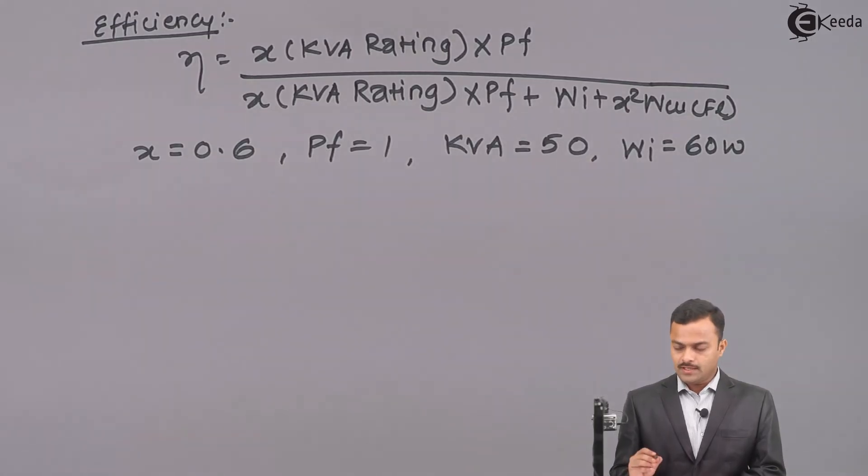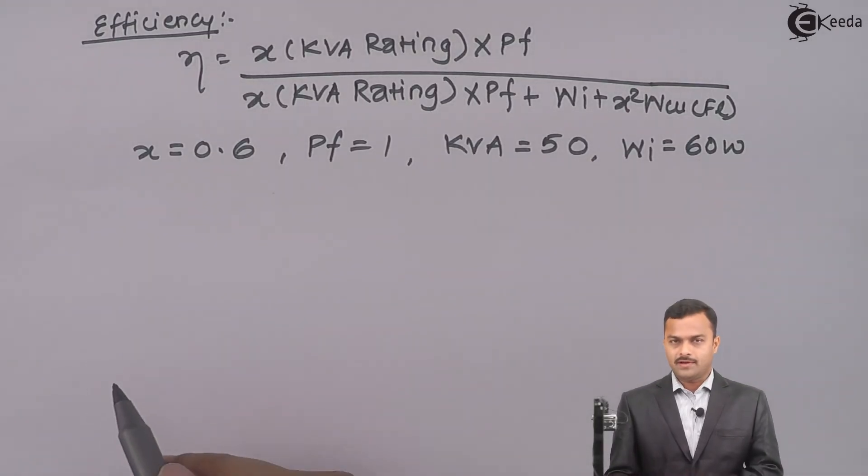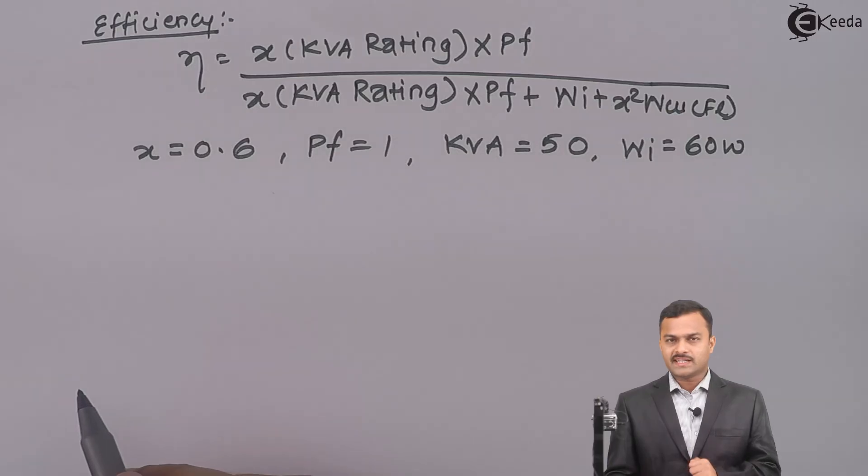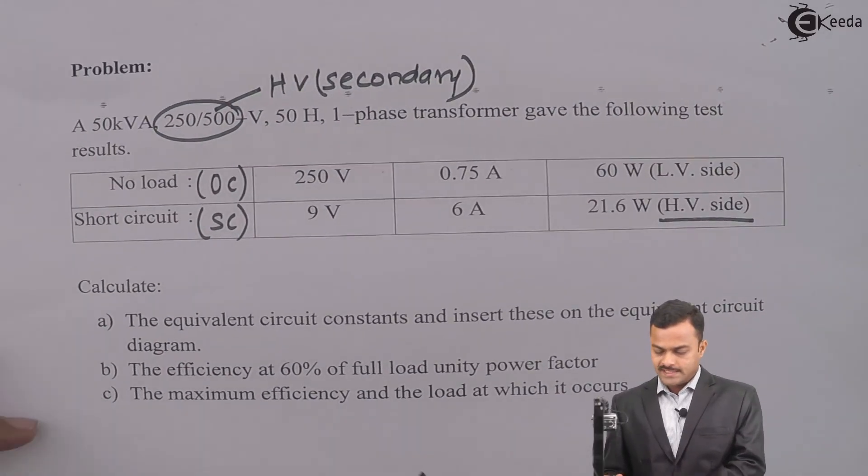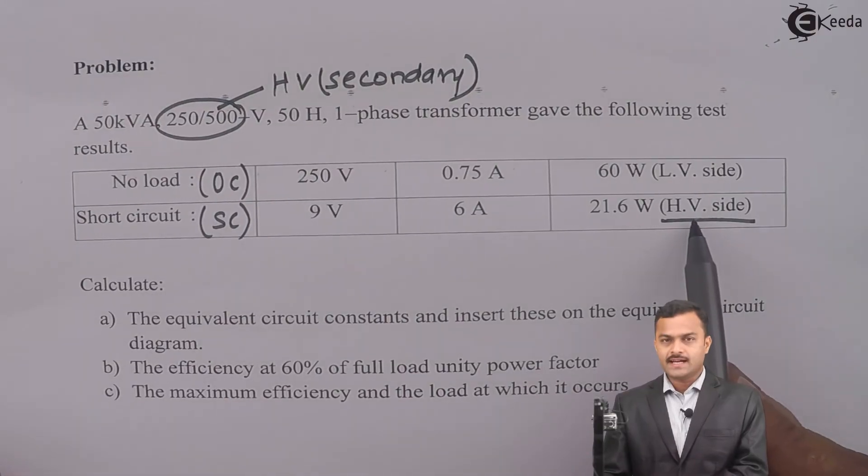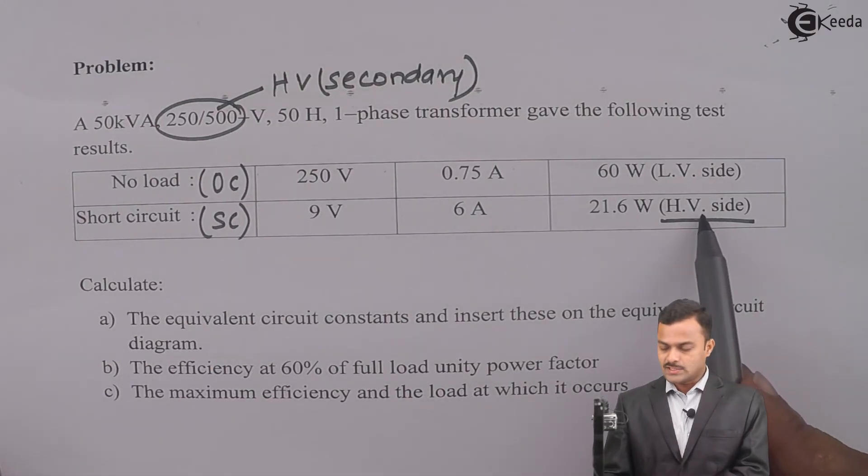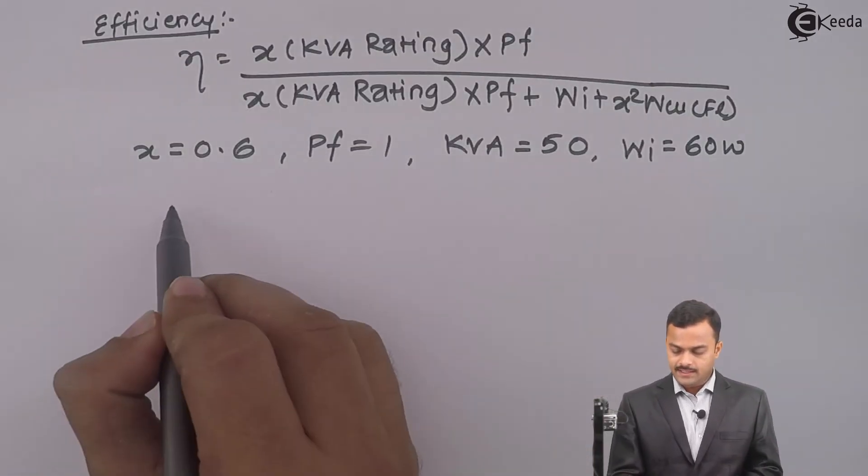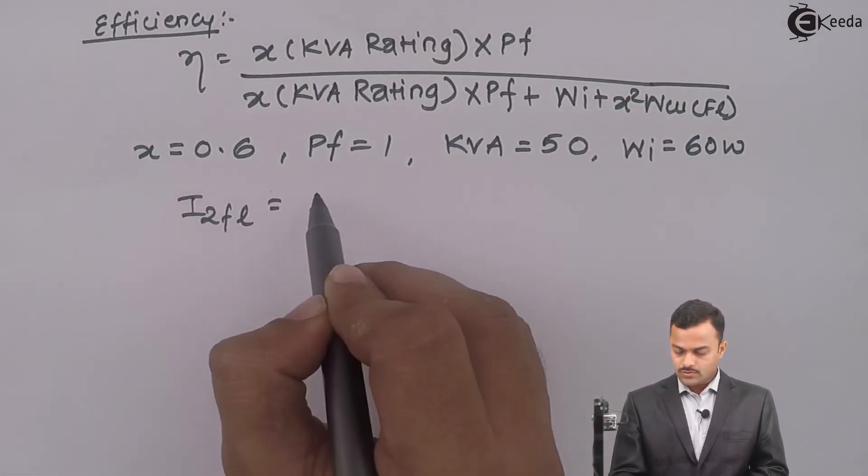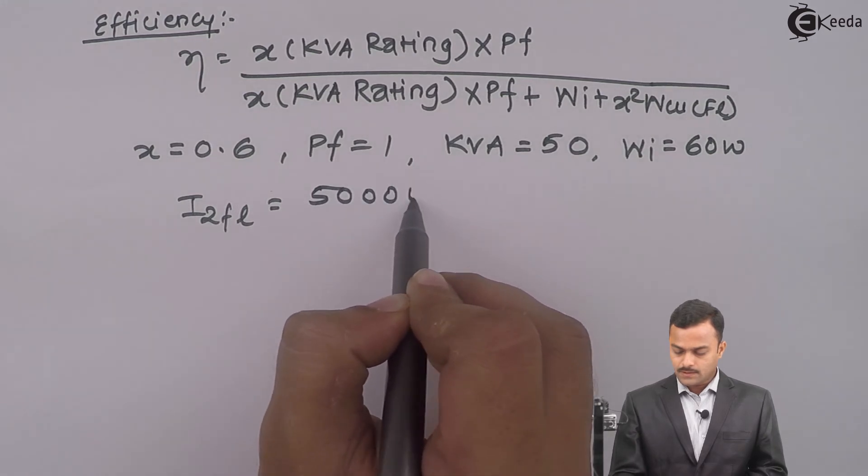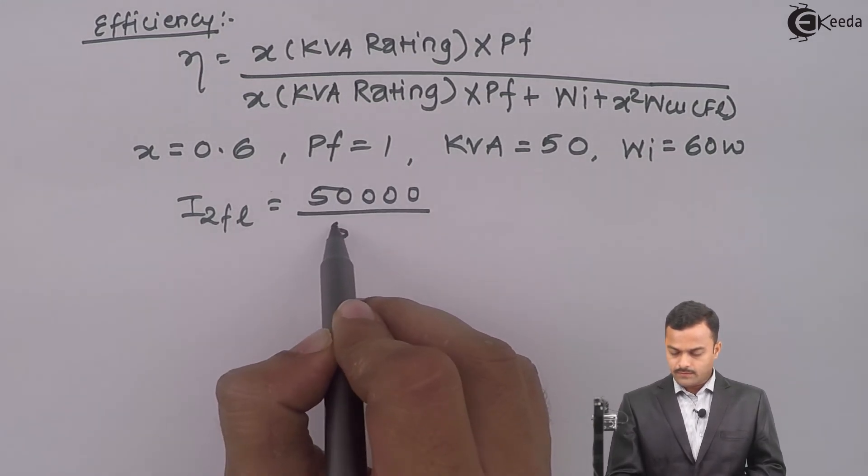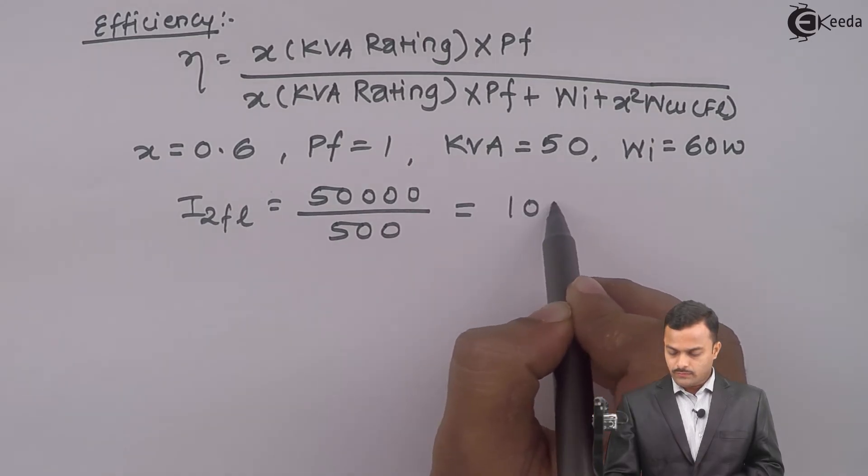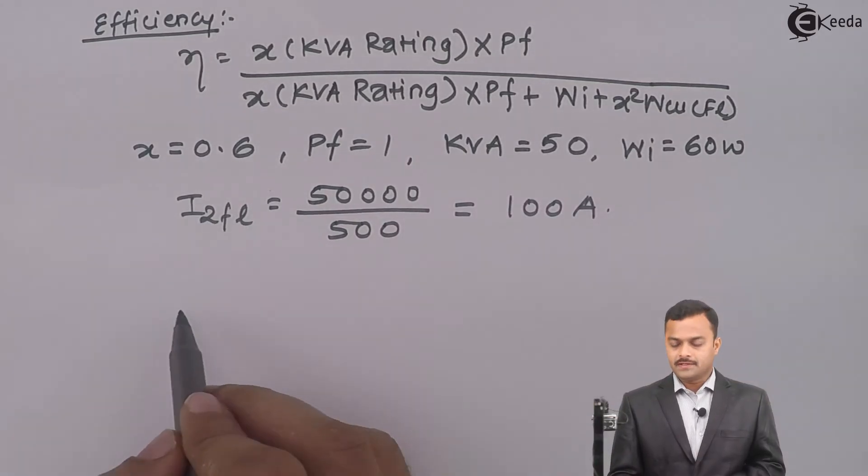The only unknown is WCUFL. For that I should know IFL, but whether primary or secondary depends where test is performed. Test is performed on HV side, which is secondary. So I need I2FL. I2FL is 50,000 divided by 500, which is 100 ampere.